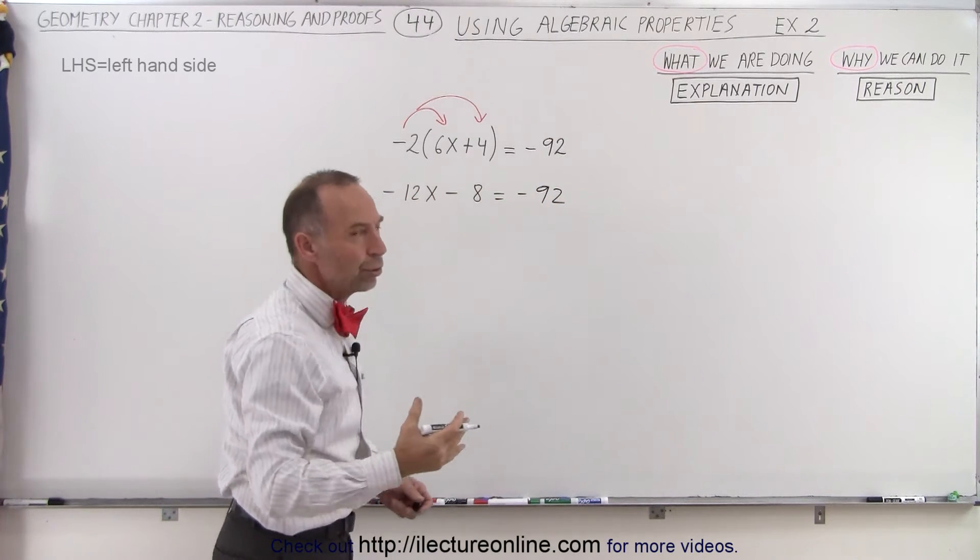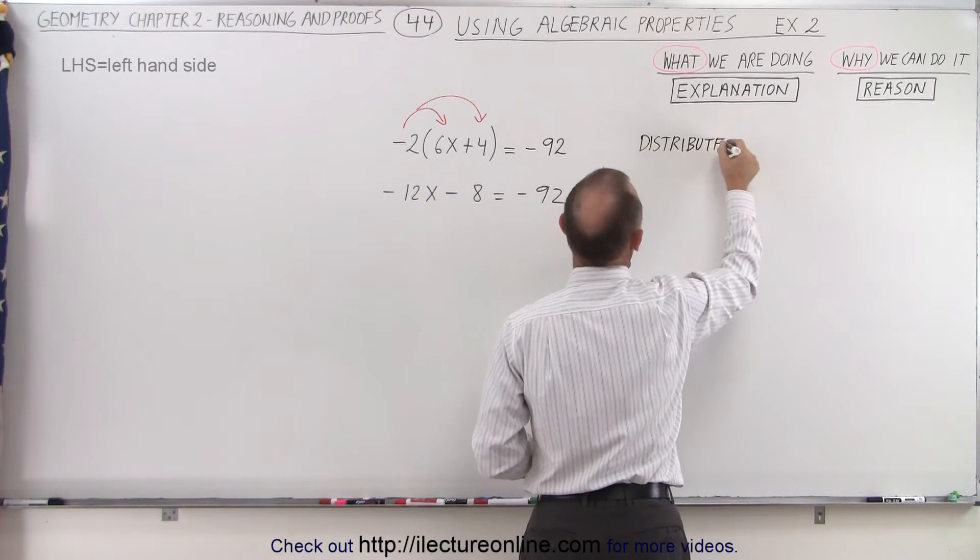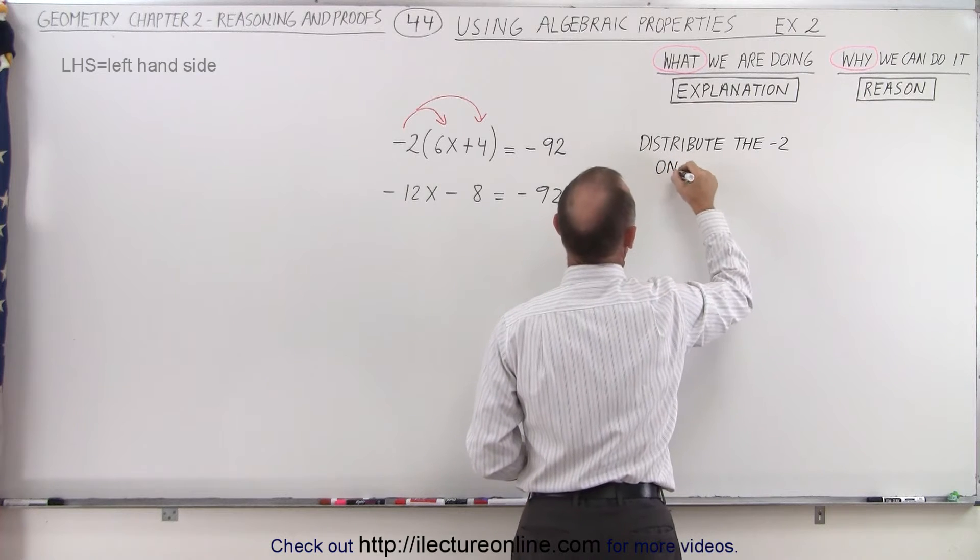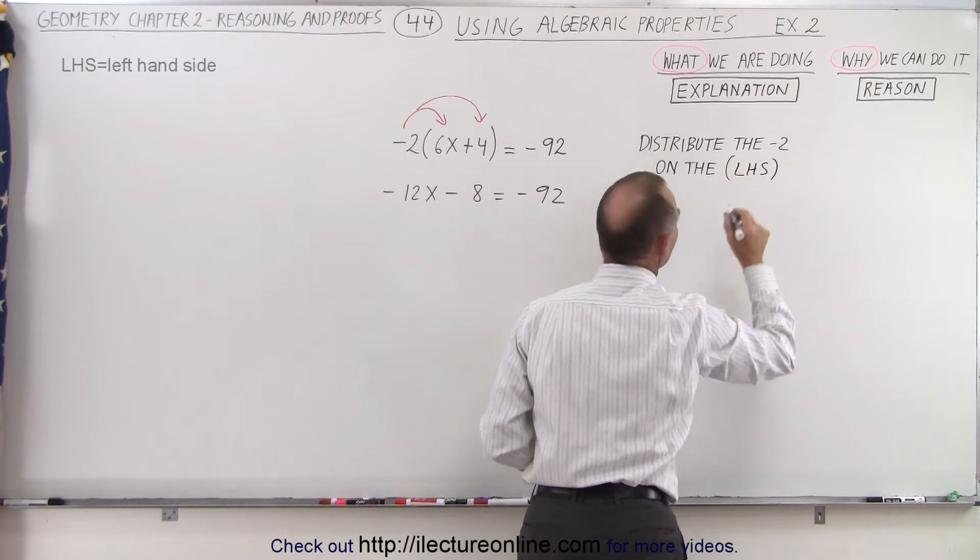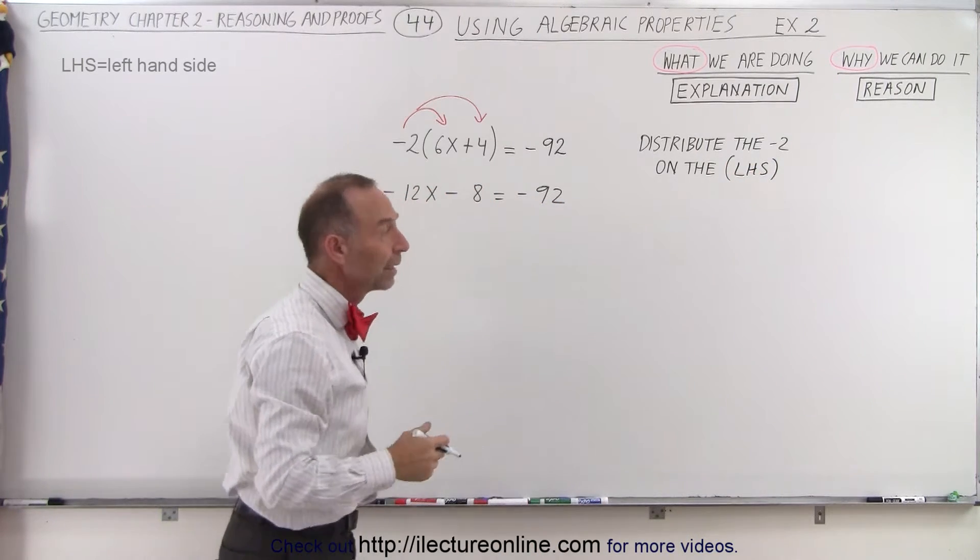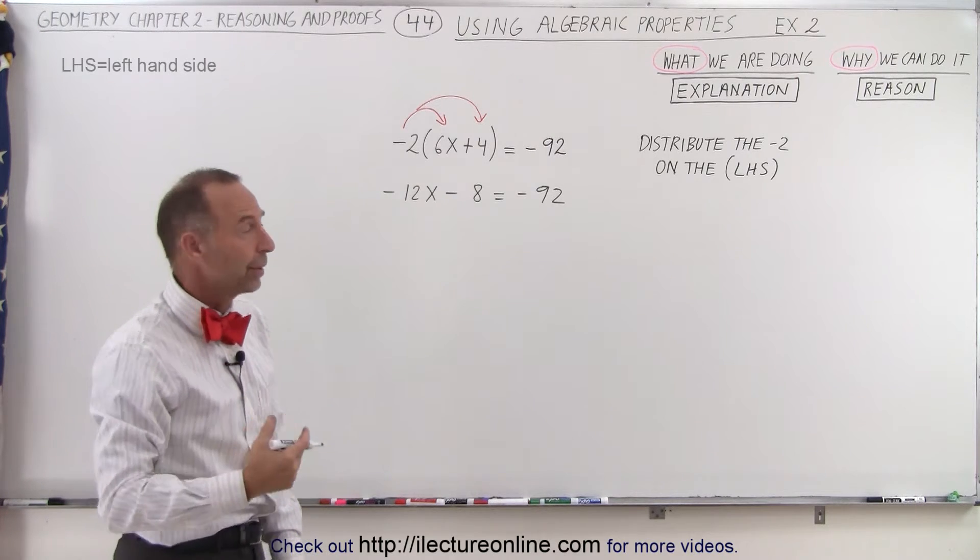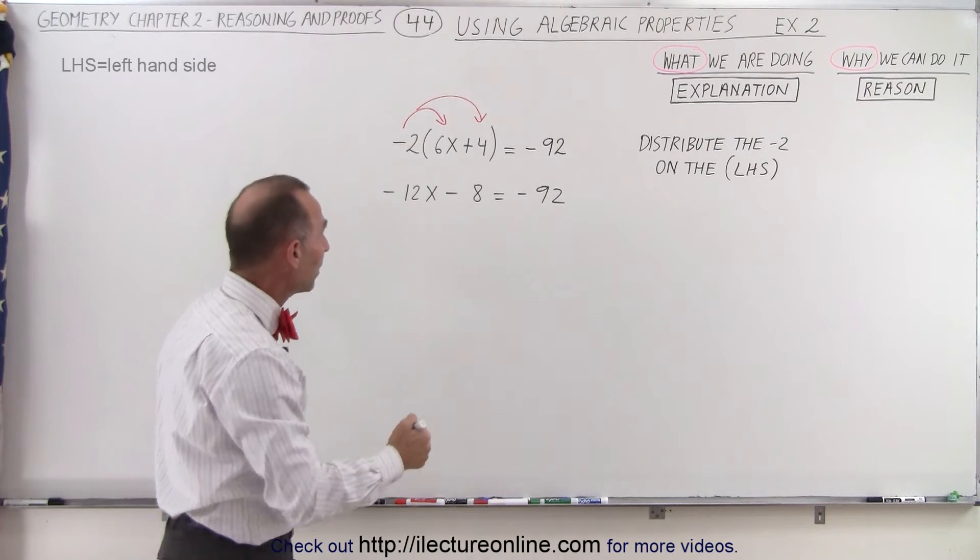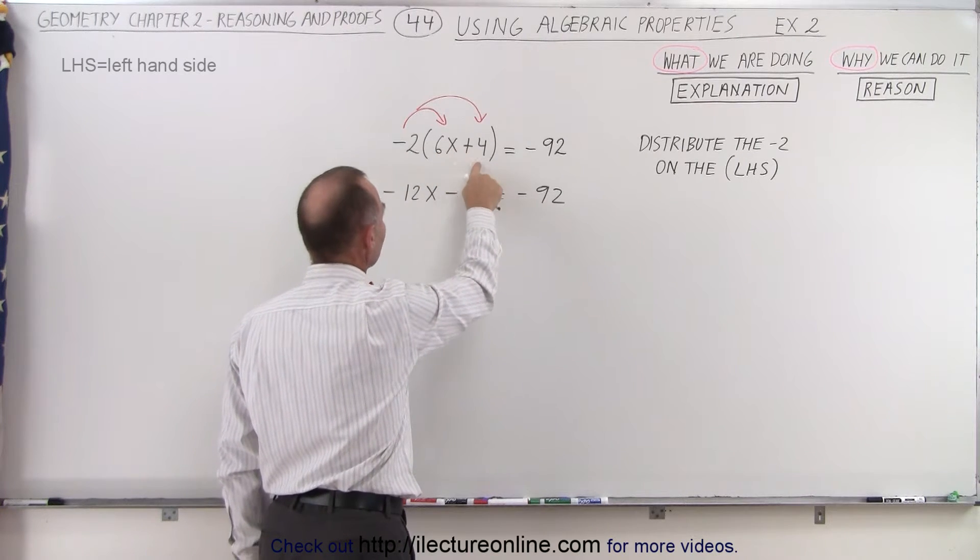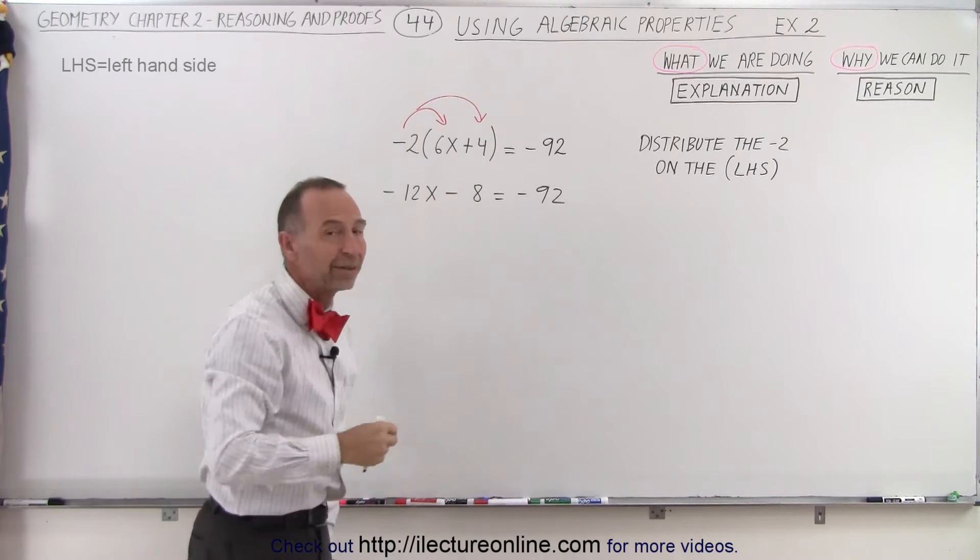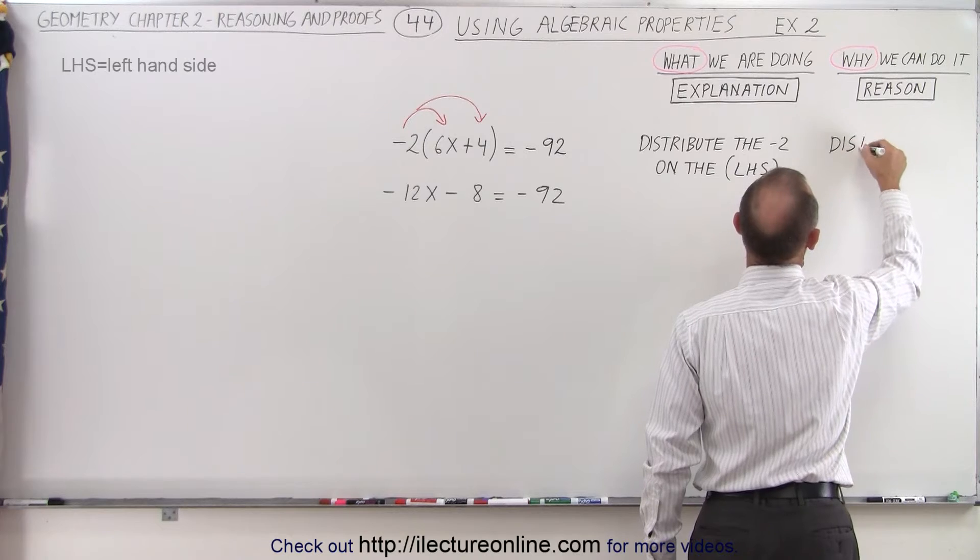So what did I do? I distributed the negative 2 on the left-hand side. LHS means on the left-hand side. Now, why am I able to do that? That's known as the distributive property in algebra. We're allowed to do that because there's a property that says I can multiply the negative 2 times the first term and the negative 2 times the second term, and I will still end up with the same thing. This is known as the distributive property of equality.